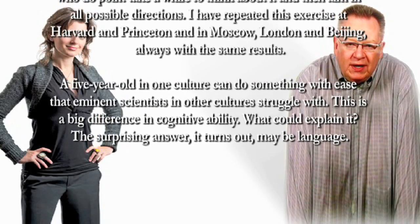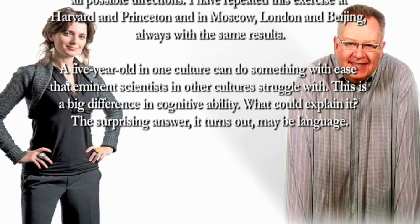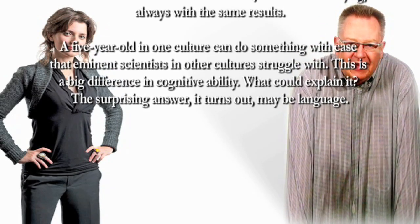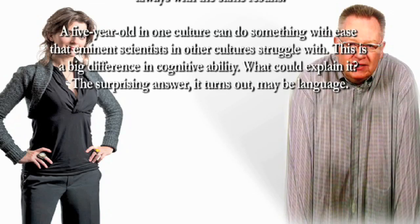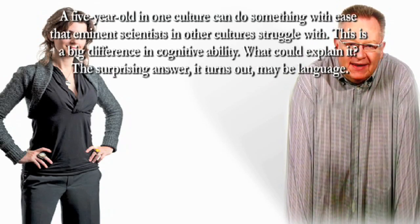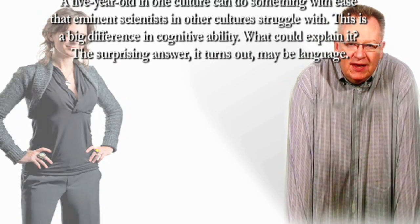A five-year-old girl in one culture can do something with ease that eminent scientists in other cultures struggle with. This is a big difference in cognitive ability. What could explain it? The surprising answer, it turns out, may be language.